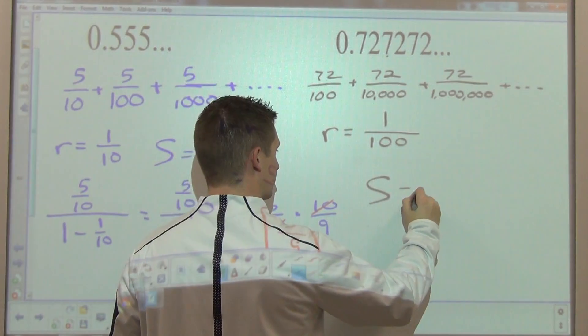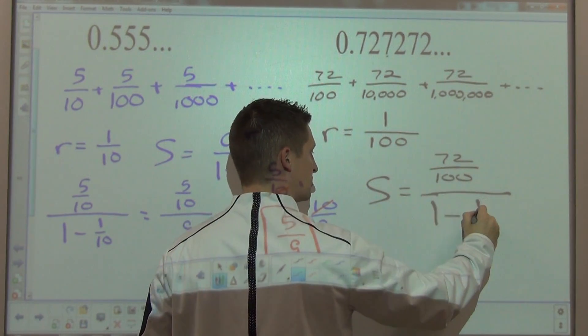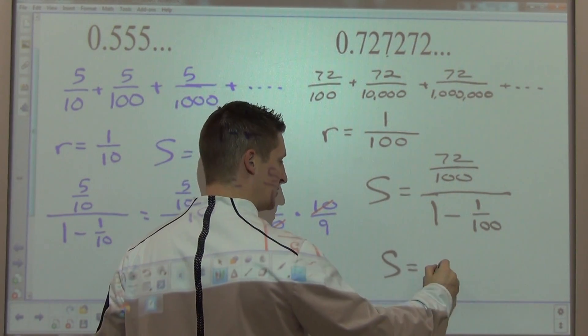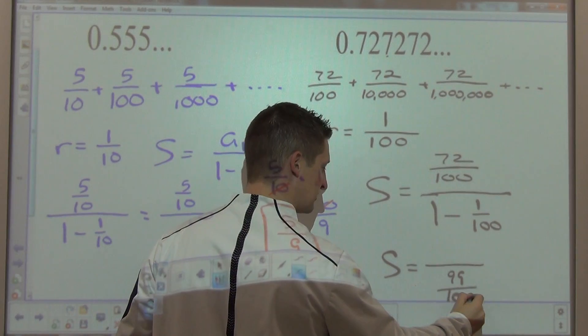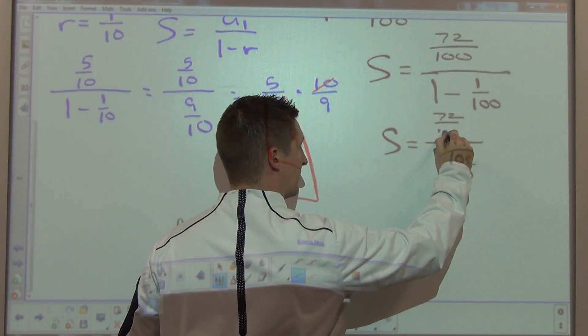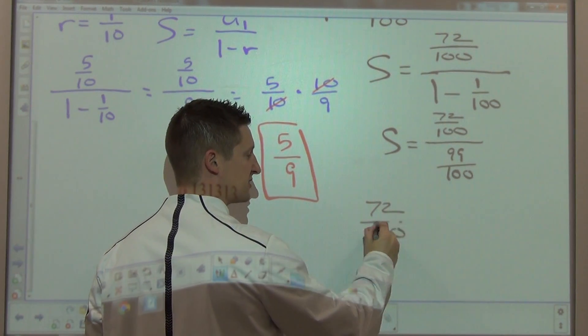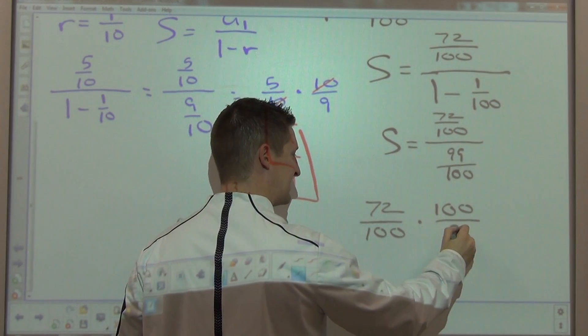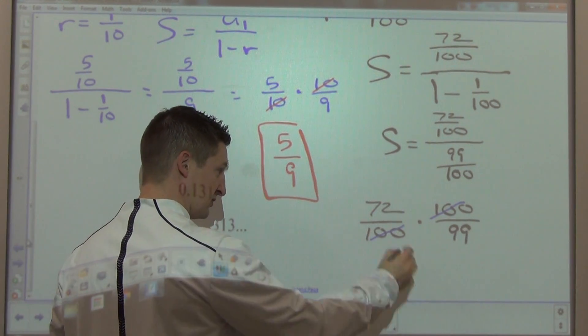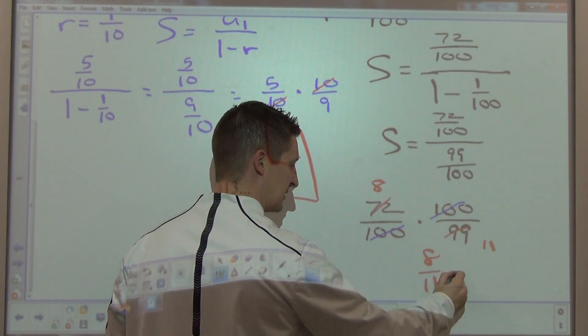To find my sum, I'm going to take the first term, 72 hundredths, divided by one minus the common ratio. As I simplify that expression, one minus one-hundredth is going to be ninety-nine-hundredths. Numerator is seventy-two-one-hundredths. Instead of dividing by a fraction, multiply by the reciprocal. So seventy-two-one-hundredths times one-hundred over ninety-nine. The hundredths cancel. Seventy-two over ninety-nine. Nine goes into seventy-two eight times, and nine goes into ninety-nine eleven times. My final answer is eight-elevenths.